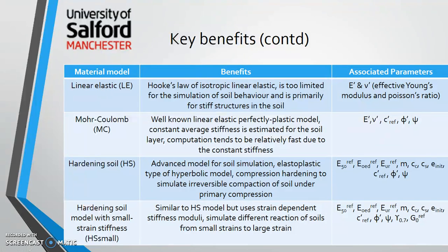The Mohr-Coulomb model is an elastic perfectly plastic model with a constant average stiffness, which makes computation relatively fast. The parameters you will need include friction angle, dilatancy, cohesion, Young's modulus, and Poisson's ratio. Similarly, the hardening soil and hardening soil small-strain models list their benefits and required parameters. For further information on these parameters, refer to the PLAXIS manual.